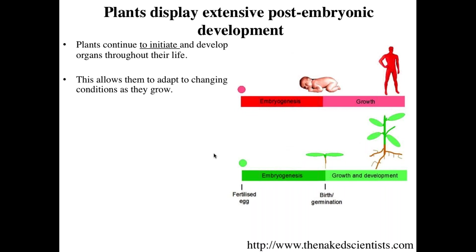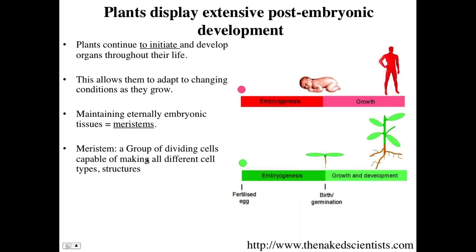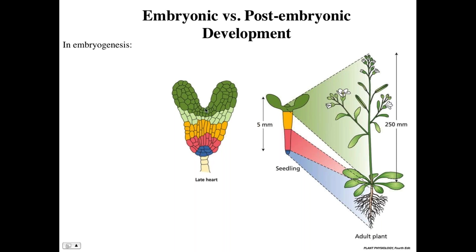This is key for allowing plants to adapt to changing conditions as they grow. If they're sessile, the embryo during embryogenesis could not predict the conditions the plant would see over its lifetime. So the plant has to be prepared to change to respond to any possible environmental changes. The term for these extra-embryonic stem cells is meristems — a group of dividing cells. These cells divide very slowly but are capable of making all possible differentiated cell types and structures. During embryogenesis, polarity and symmetry are set, establishing the initial two meristems: the shoot apical meristem and the root meristem.